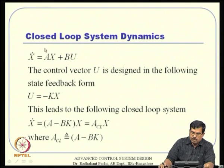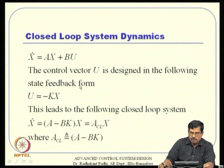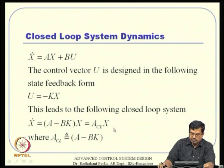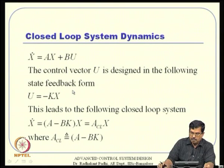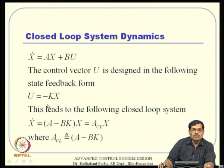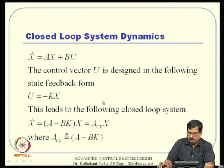The idea of closed-loop system dynamics: when a control design U = -KX (state feedback) is applied, this leads to closed-loop dynamics x-dot = (A - BK)X. So A_CL = A - BK is the closed-loop system matrix. The whole idea is that if the system is unstable you can make it stable by selecting an appropriate gain matrix K, and even if the system is stable you can alter the eigenvalues by designing a control system this way.